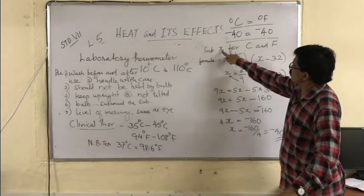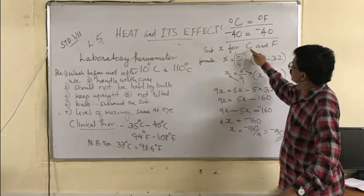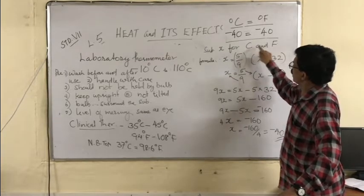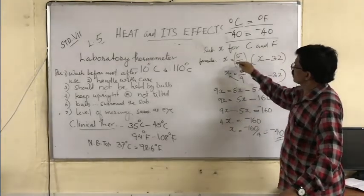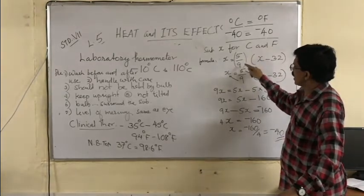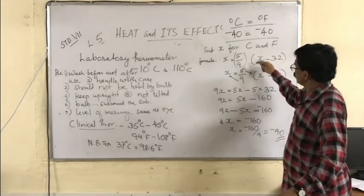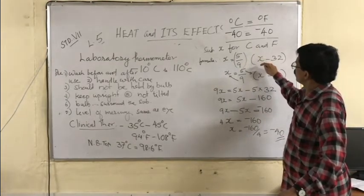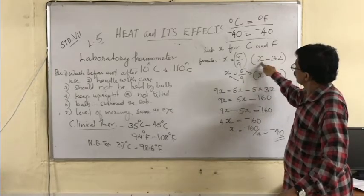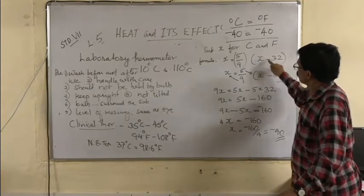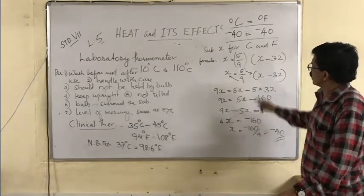We have to substitute X wherever the X comes in C and F. So X is equal to 5 by 9 into X minus 32. This is the equation.